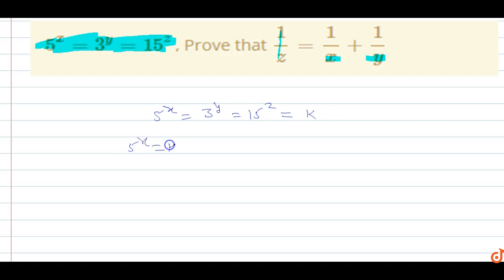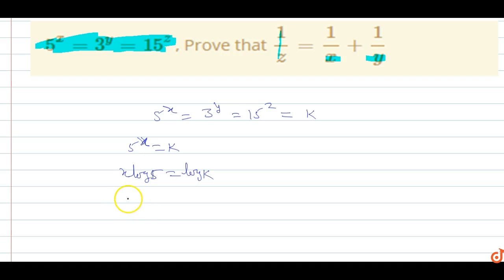Since 5 power x equals k, taking log on both sides, this becomes x log 5 equals log k. So 1 upon x equals log 5 base k.